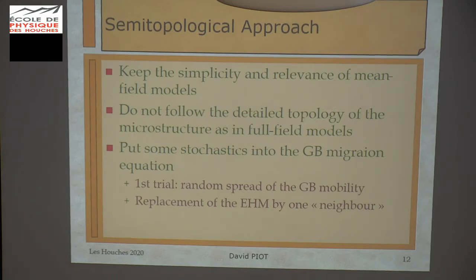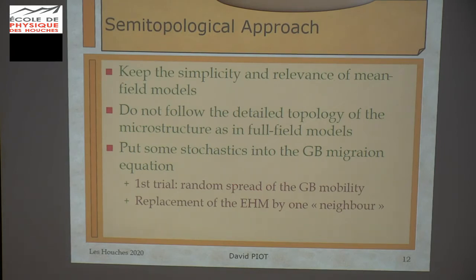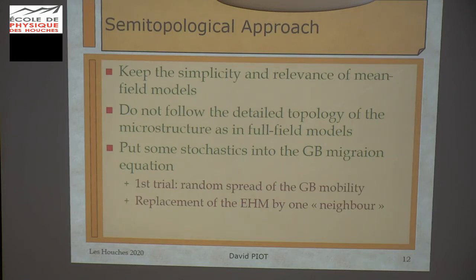This is a reason why we have tried to develop a semi-topological approach. The idea is to keep the simplicity and relevance of mean field models, not to follow the detailed topology of the microstructure as in full-field models because it's too time-consuming, and to put some stochastics into the grain boundary migration equation. In order to test this idea, we did a first trial using a random spread of the grain boundary mobility, just to see. We obtained a better grain size distribution, but we needed a very large spread to obtain results similar to experimental grain size distributions.